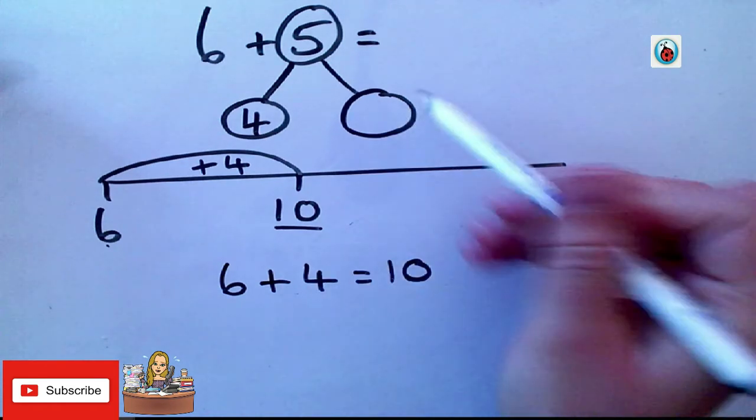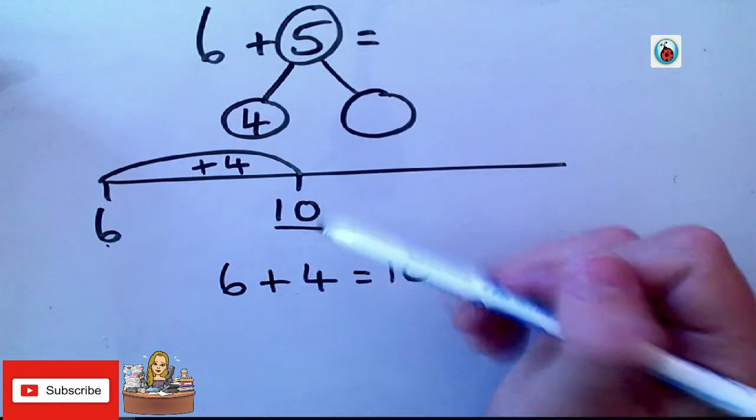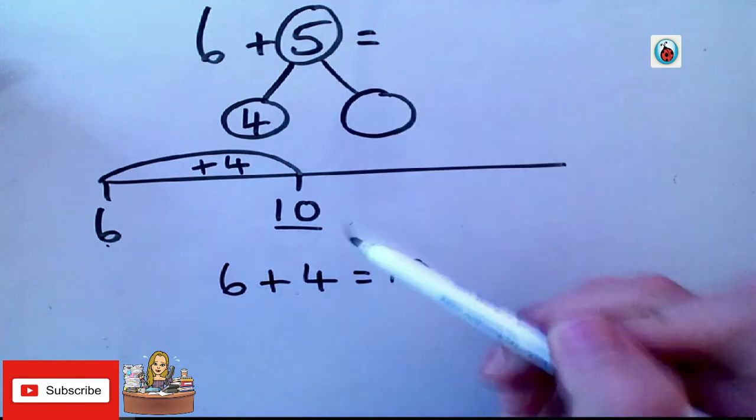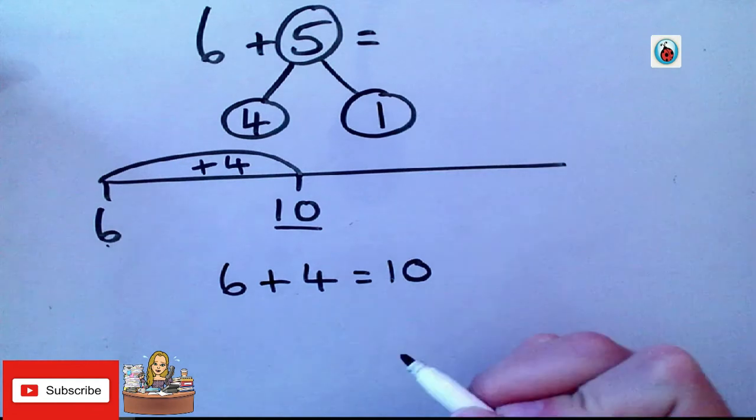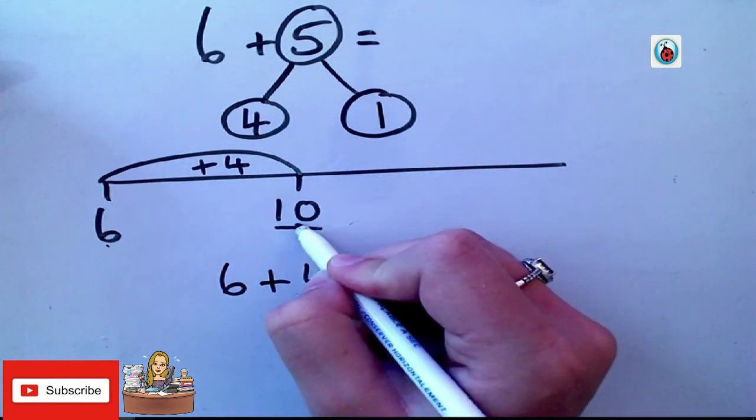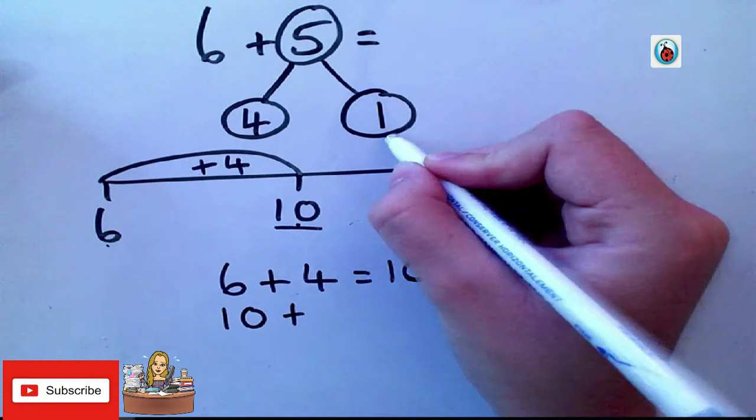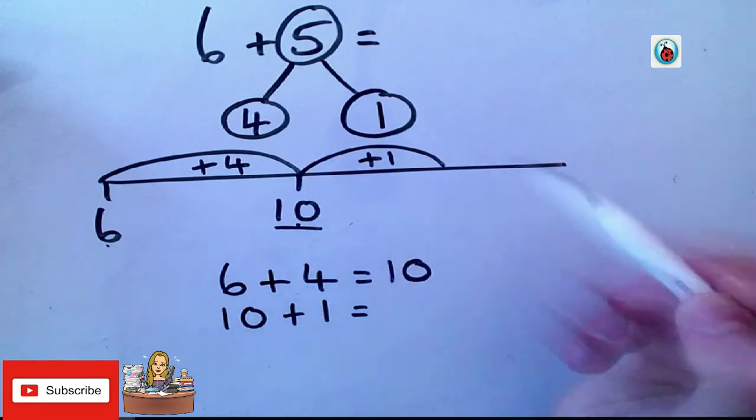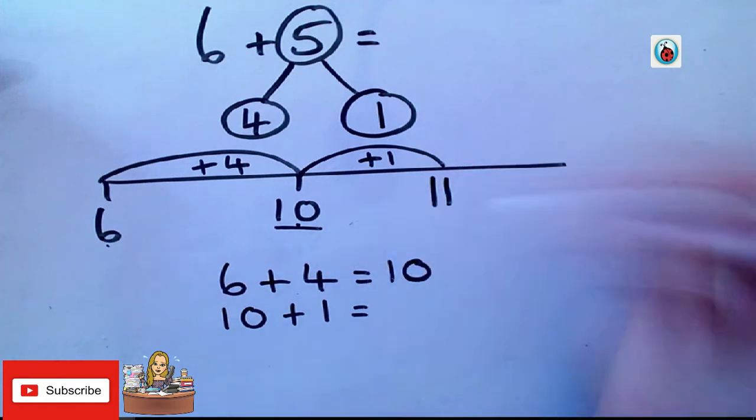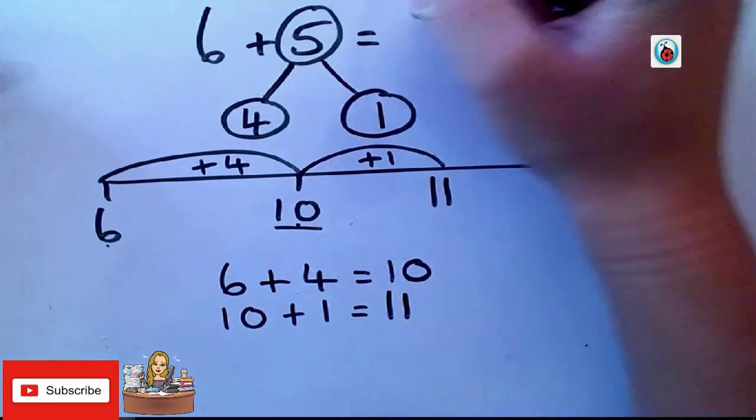What is my other number that I need to make 5? 4 add something is 5. What's that other number? Brilliant. It's 1. So, now, I'm on 10. Add 1. Equals what? Good. 11. So, now, I've got 11.